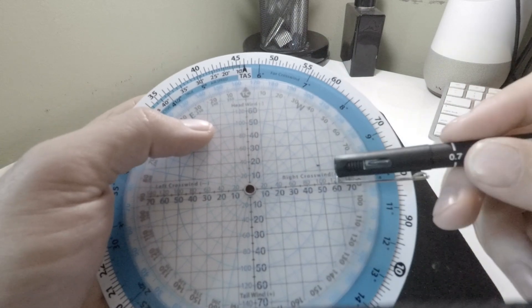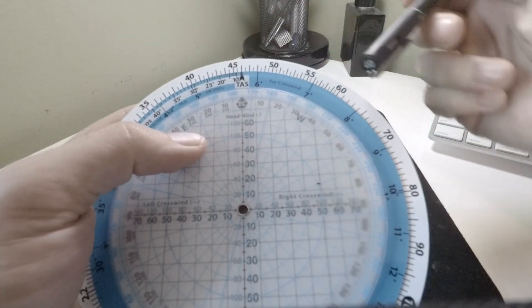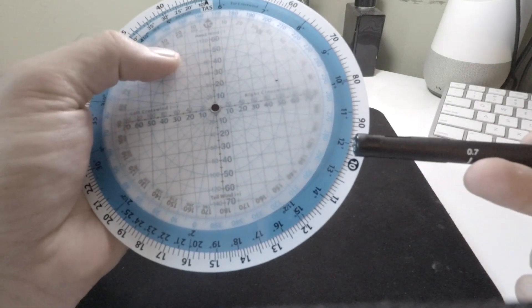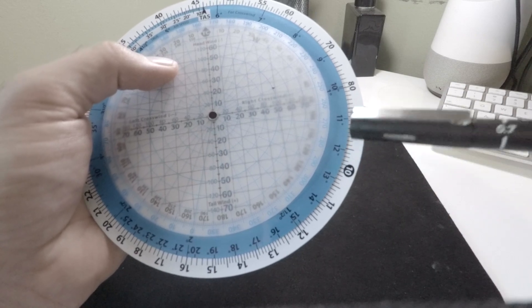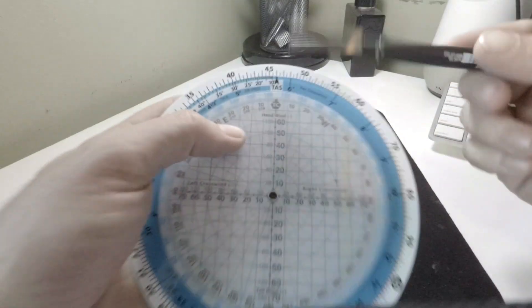Given that we've got 97 knots of crosswind, what we do is we come around the white to 97, which puts us at about 12 degrees of drift angle on the blue section. So with the 12, we come back up to the top here.